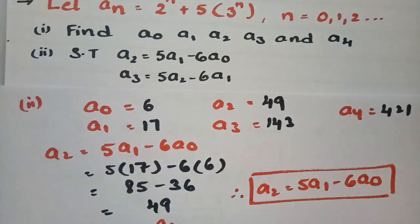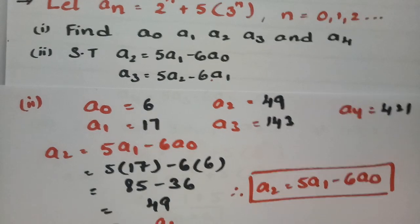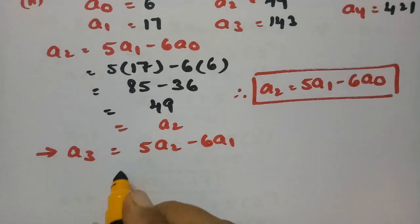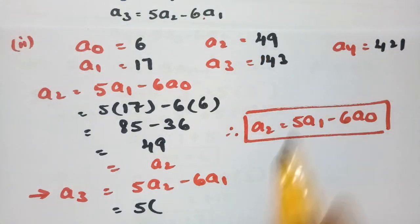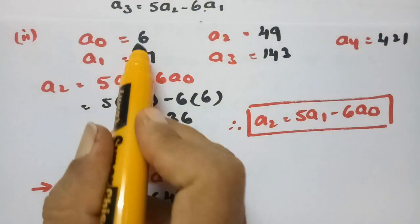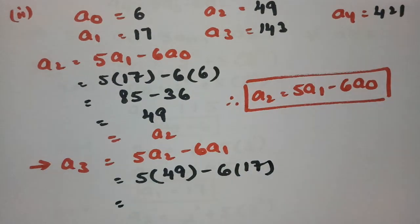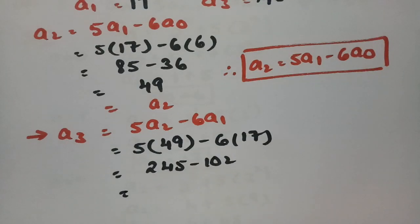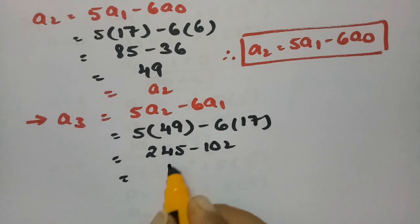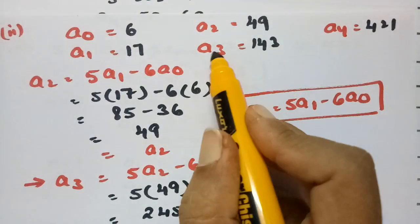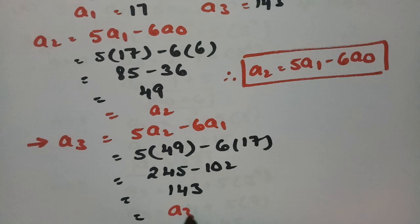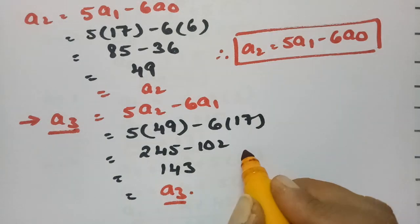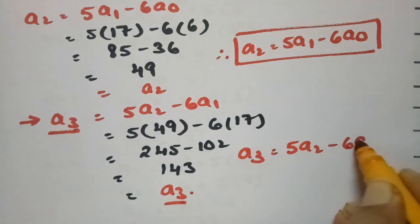Next, we have to show that a_3 equals 5a_2 minus 6a_1. Substituting: 5 times 49 minus 6 times 17, which is 245 minus 102, equals 143. And 143 is exactly a_3. So LHS equals RHS, therefore a_3 equals 5a_2 minus 6a_1 is verified.